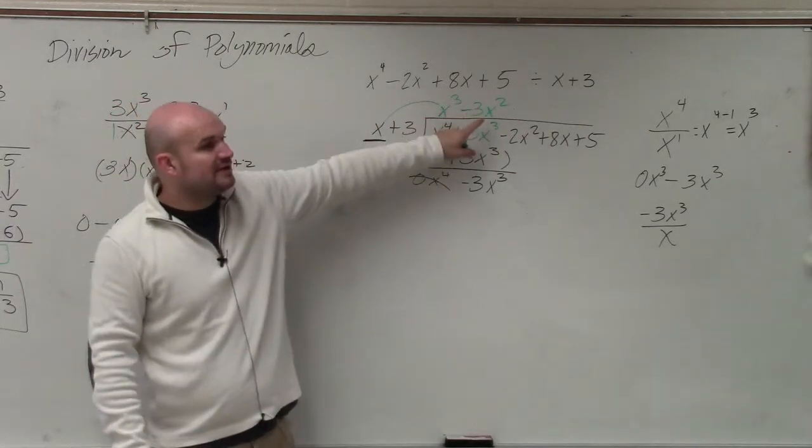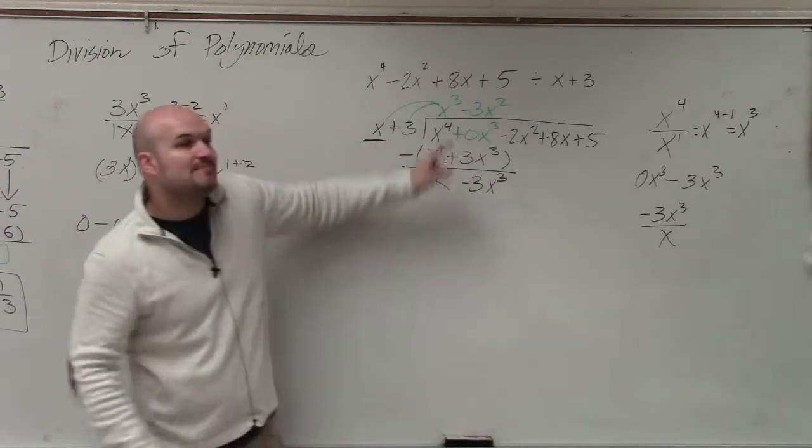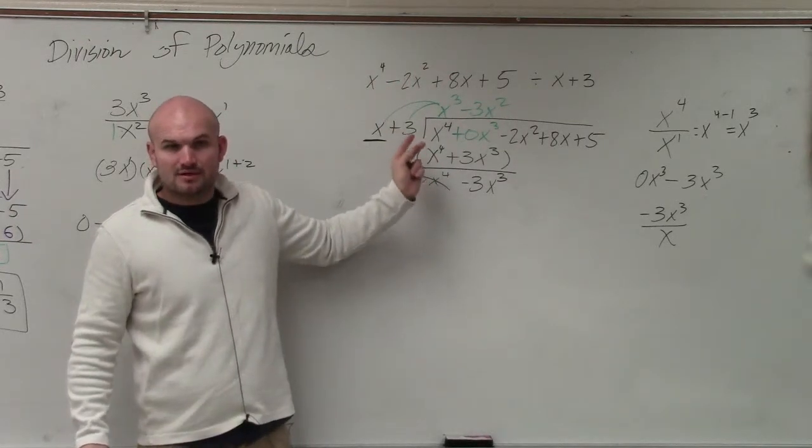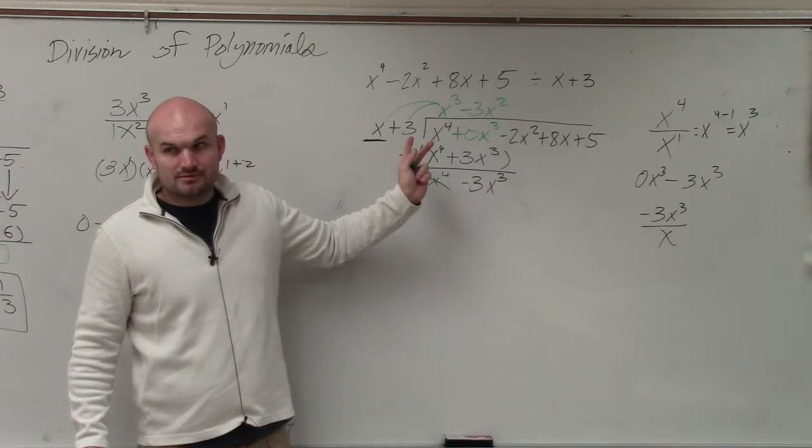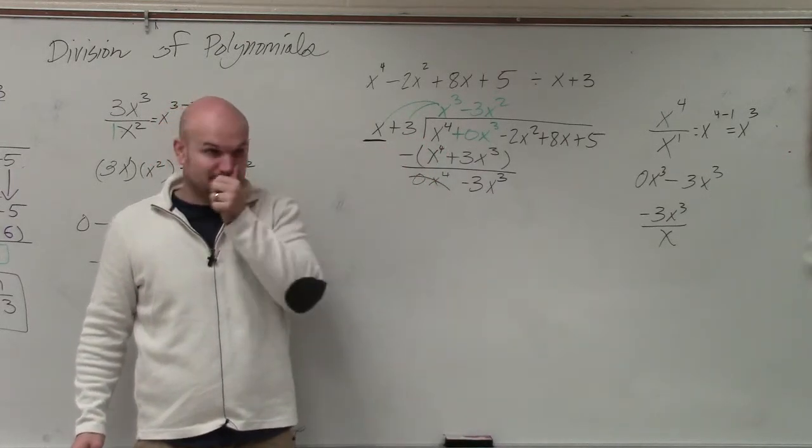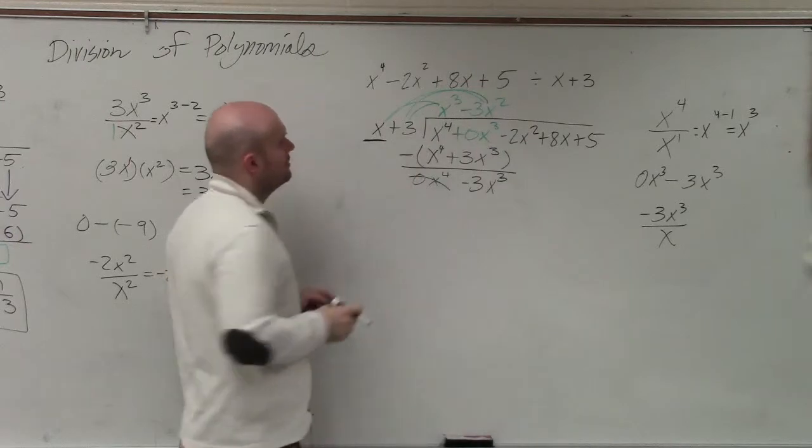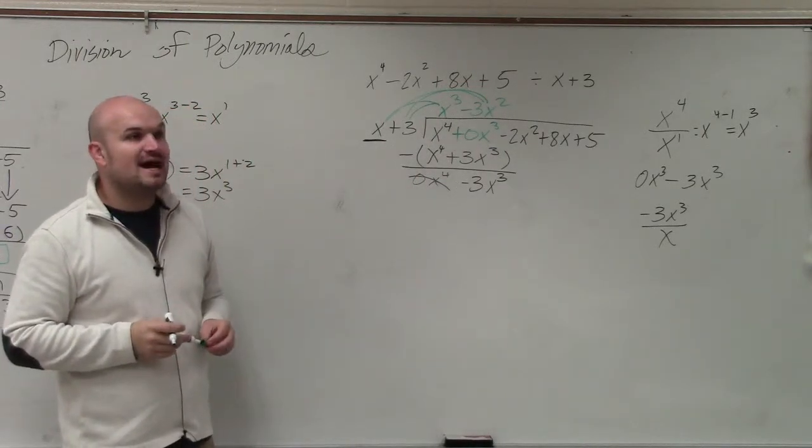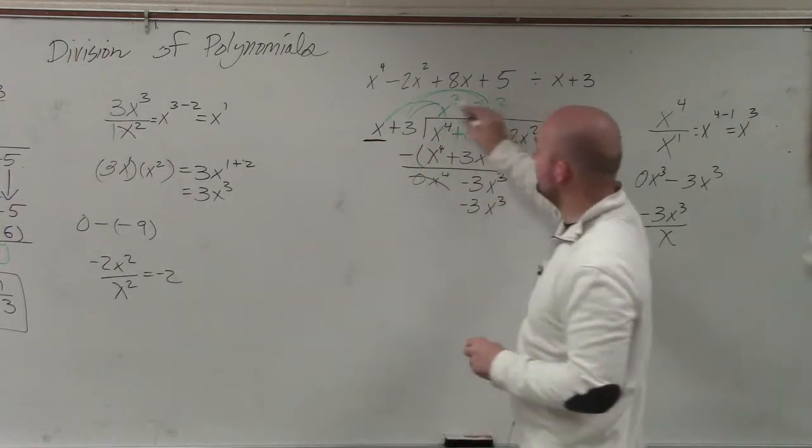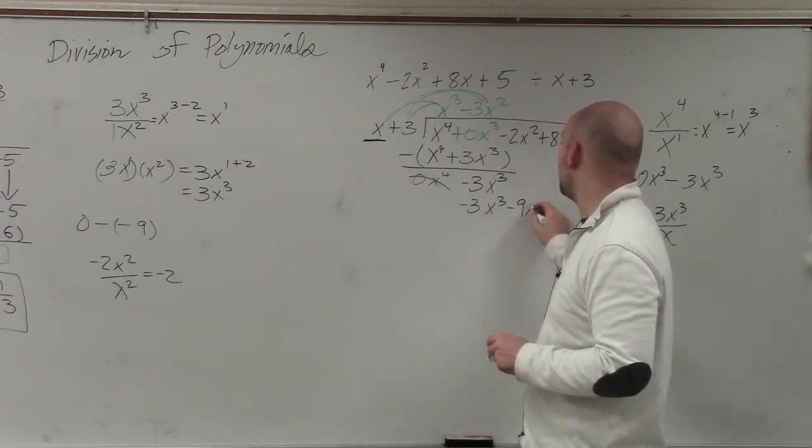Then I take negative 3x squared and I multiply it. Oops, I didn't show you guys this. Then I multiply negative 3x squared times both of my divisors. Yes, questions? Did I lose anybody yet? Oh, we're still all on board? So now I just multiply it by both of the terms again. Negative 3x squared times x is just going to give us negative 3x cubed. We're going to compute negative 3x squared times 3 is now going to give us a negative 9x squared.